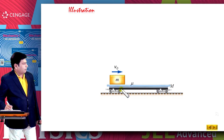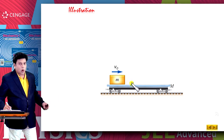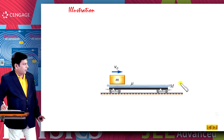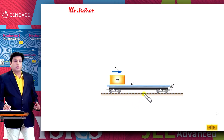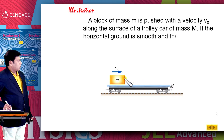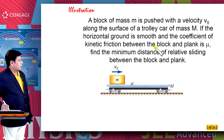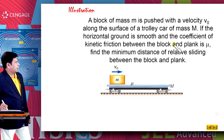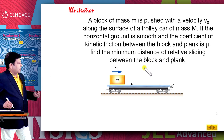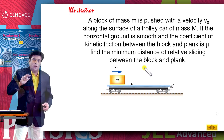Let us take one more illustration. There is a block of mass small m placed on a trolley. There is friction between the trolley and block. The trolley has mass capital M and there is no friction between the trolley and ground. A block of mass m is pushed with velocity v0 onto the rough surface of the trolley. We need to find the minimum distance of relative sliding between the block and plank.